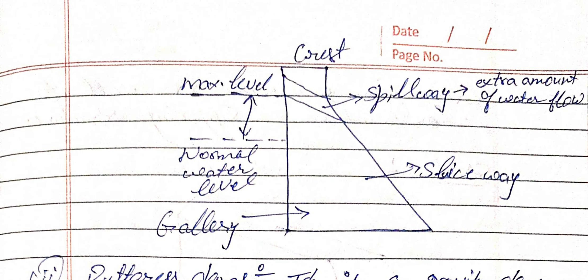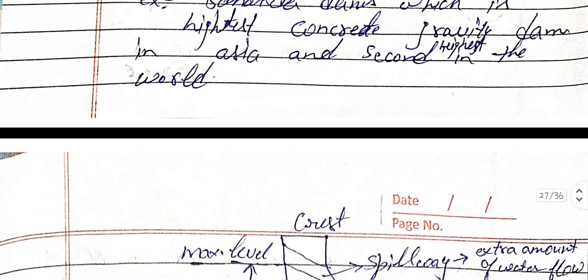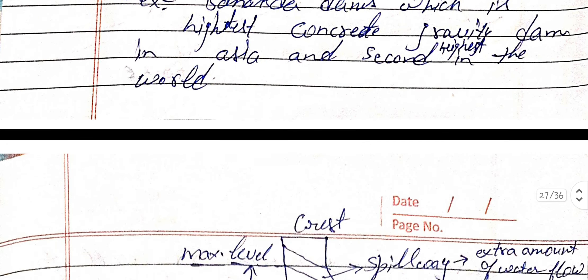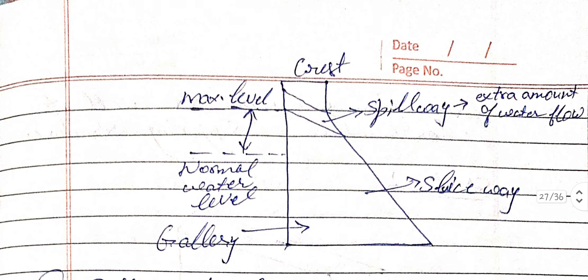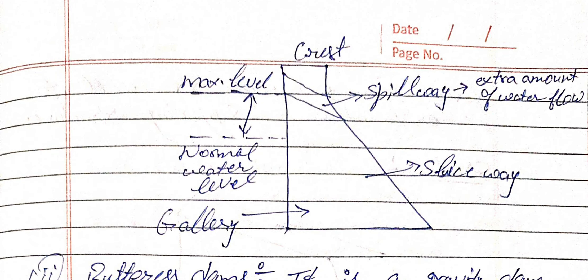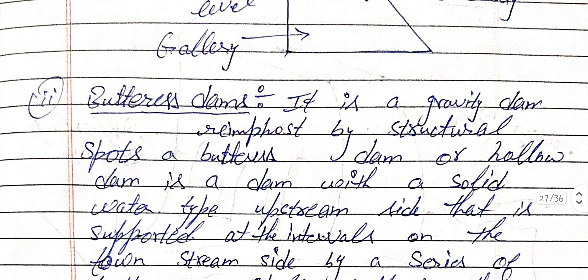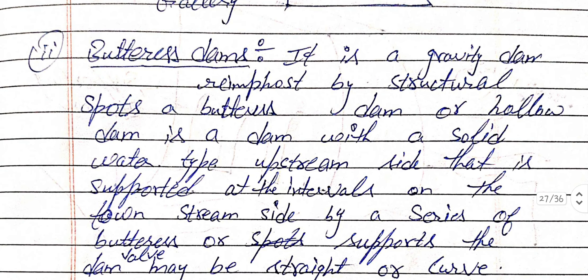An example is the Bhakra dam, which is the highest concrete gravity dam in Asia and the second highest in the world. This is the diagram for solid gravity dams.